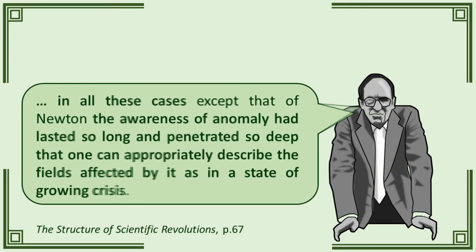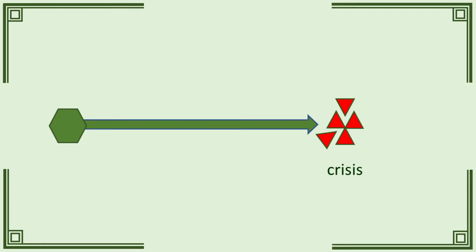In all these cases, the awareness of anomaly had lasted so long and penetrated so deep that one can appropriately describe the fields affected by it as in a state of growing crisis. The occurrence of crisis causes a field to fracture and there are generally three things that can happen.